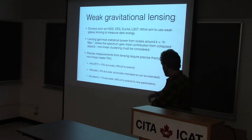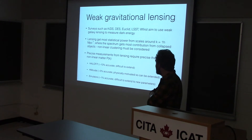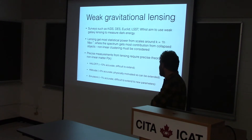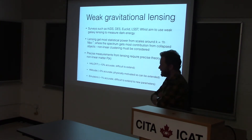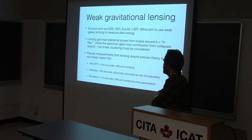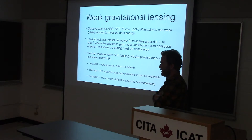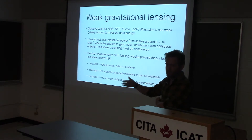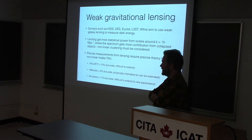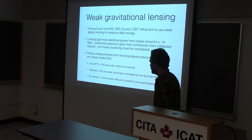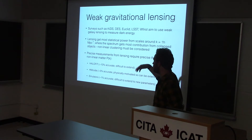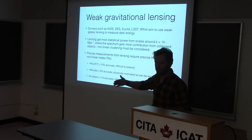Weak gravitational lensing. There are surveys such as KIDS, DES, Euclid, LSST, WFIRST, and probably others. One of the primary aims of these things is to measure the properties of dark energy. They take advantage of the low redshift nature of weak gravitational lensing, because dark energy is most active at low redshifts. So you measure basically the matter distribution at low redshifts using these things, and dark energy will change that.